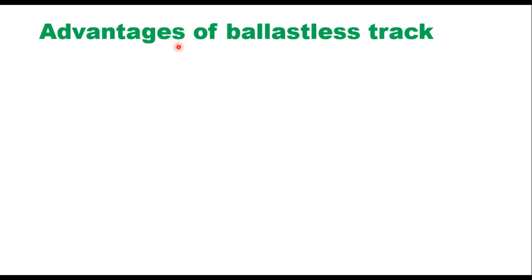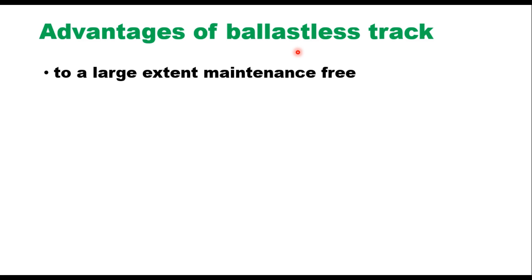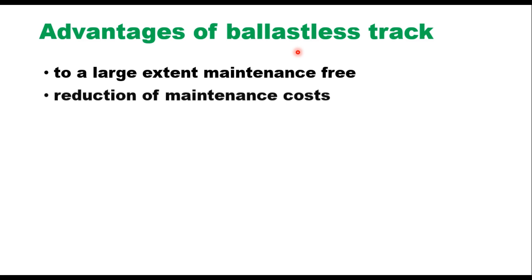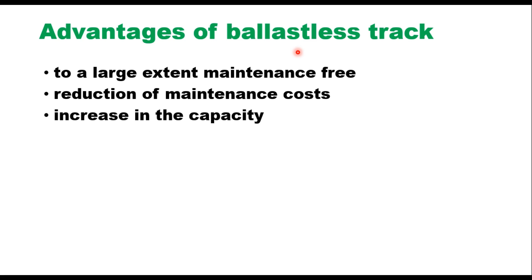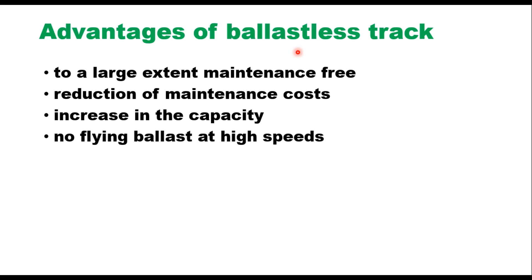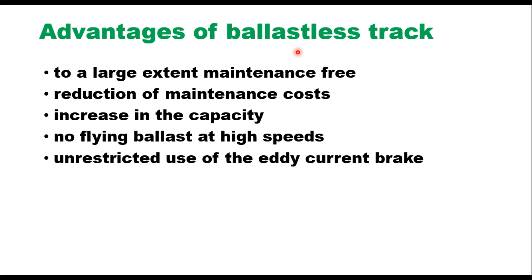There are several advantages of ballastless track over ballasted track. First, it is to a large extent a maintenance-free track, which results in an overall reduction in the maintenance cost. Second, it increases capacity in terms of both speed of the train and axle load. As mentioned earlier, ballasted track has a speed limit of 250 km per hour, but for high-speed rail, ballastless tracks are very suitable. There is also no flying ballast at high speeds, which is a problem with ballasted track.